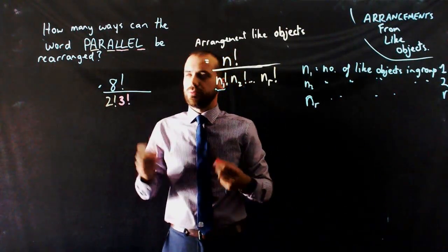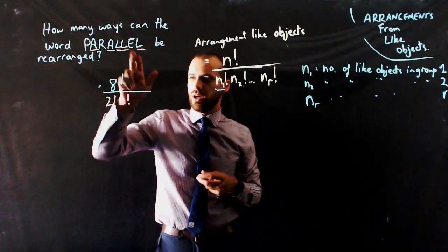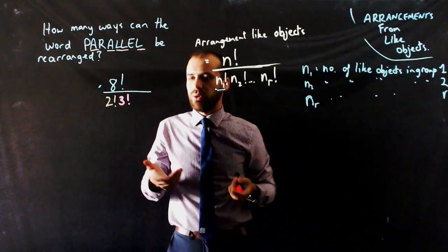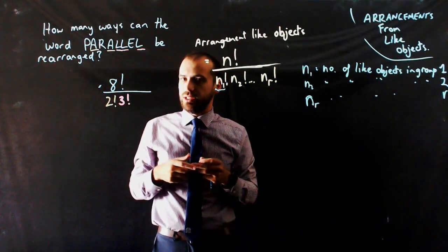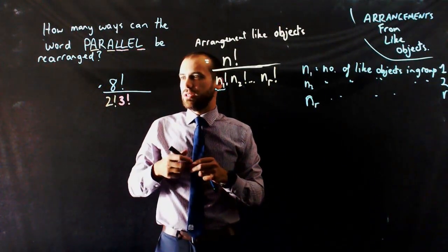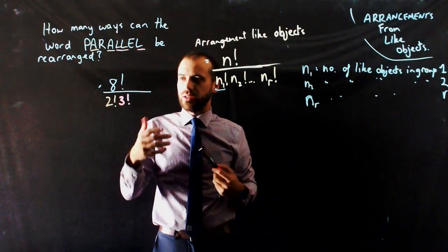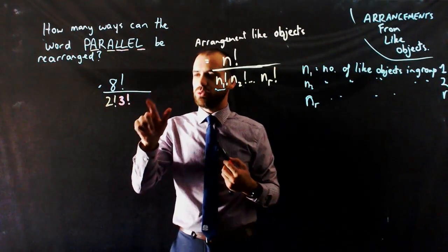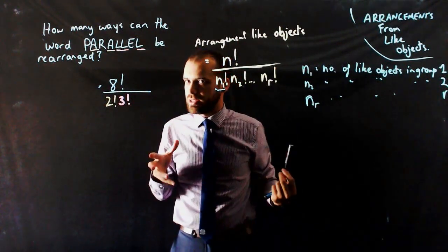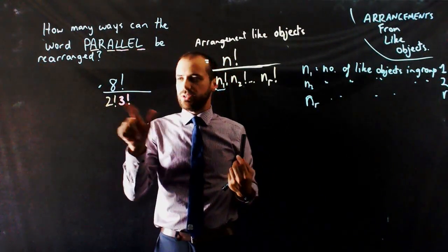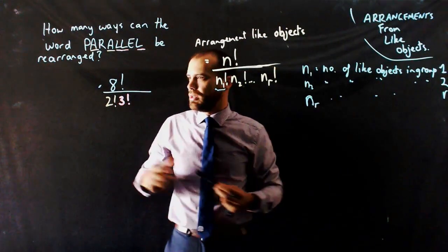Now, the other groups, there's a third group here, a fourth group here, a fifth group here. I could write those in, but think about what would happen. I've got a group with one object in it, so that's going to be just 1 factorial, which is just 1. So if I'm going to say times 1 factorial, times 1 factorial, times 1 factorial, that's just times 1 times 1 times 1, so it's not necessary. We only need to add in those N factorials if there's more than one thing in the group.